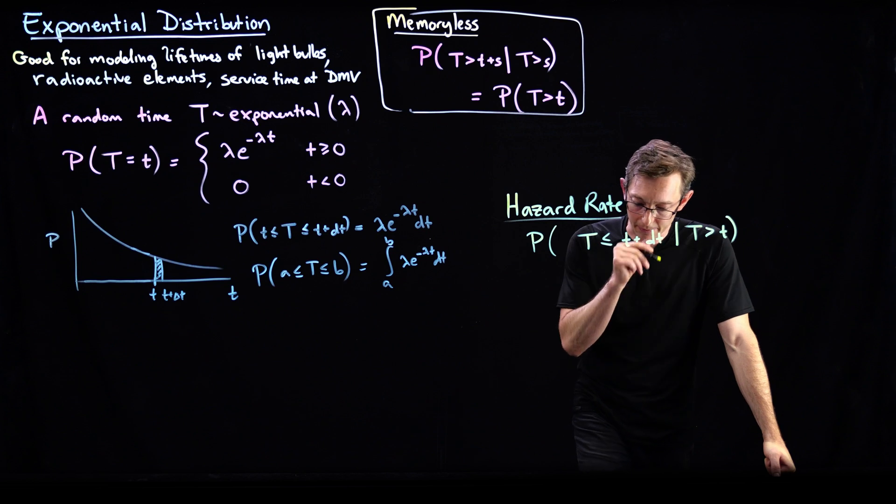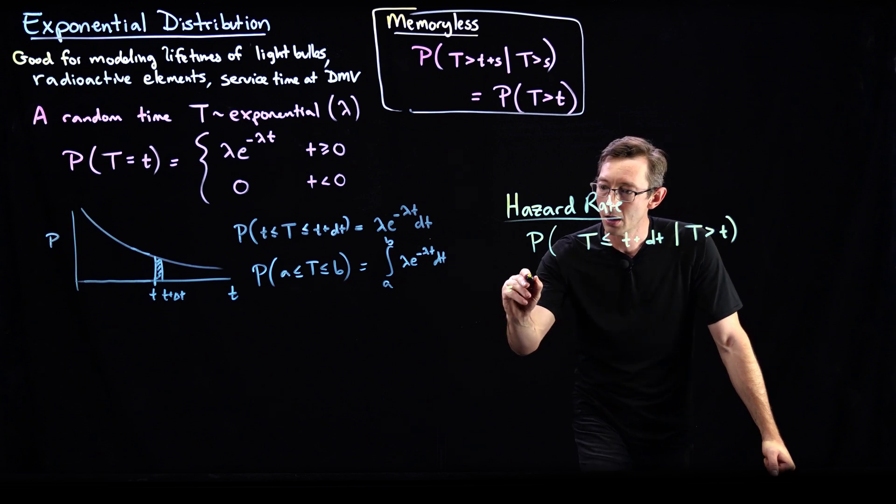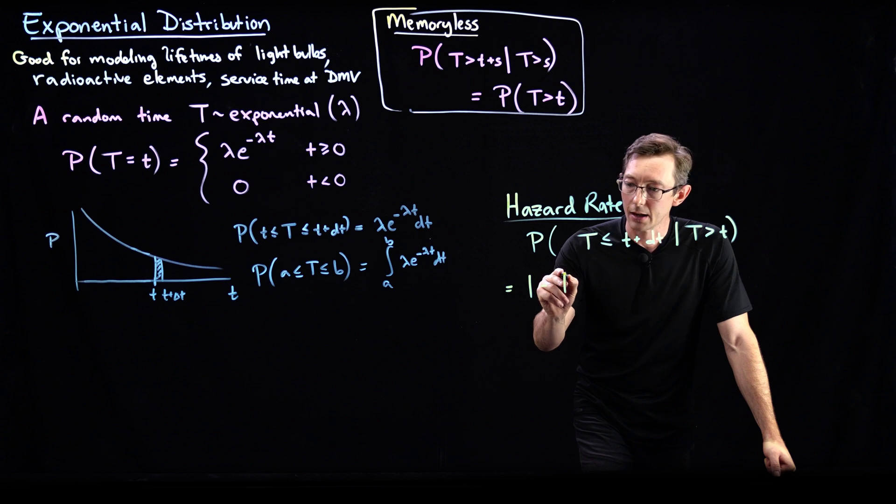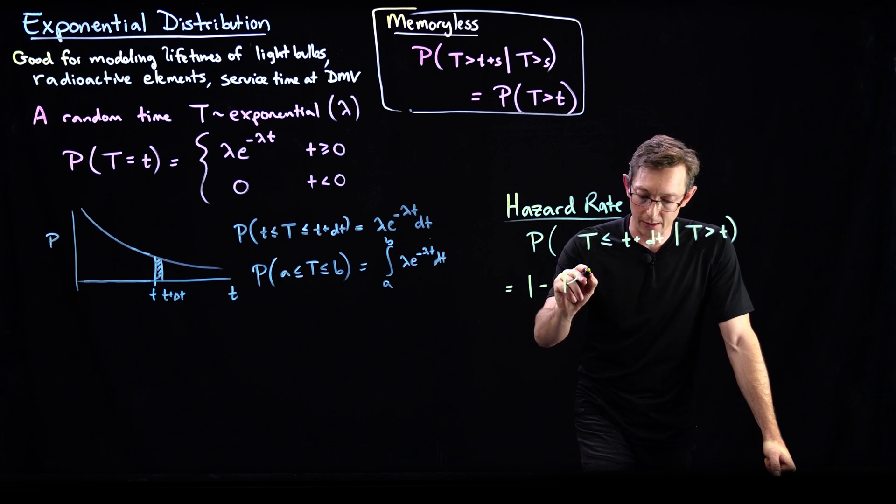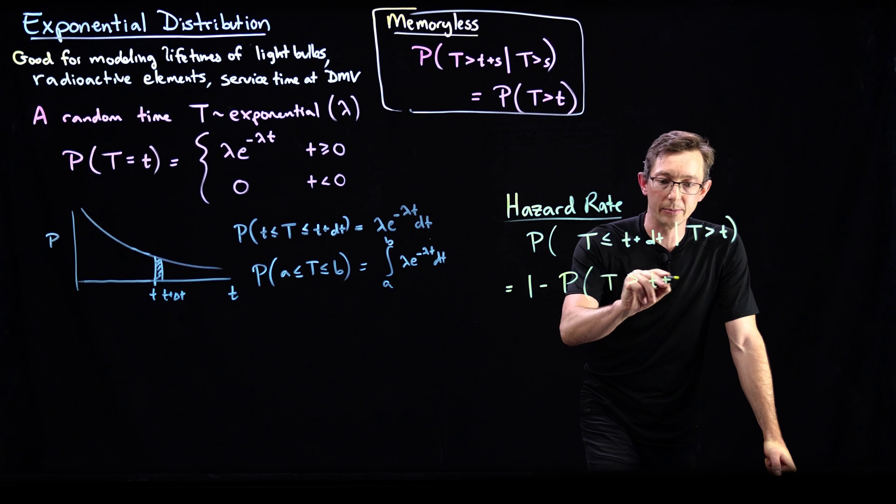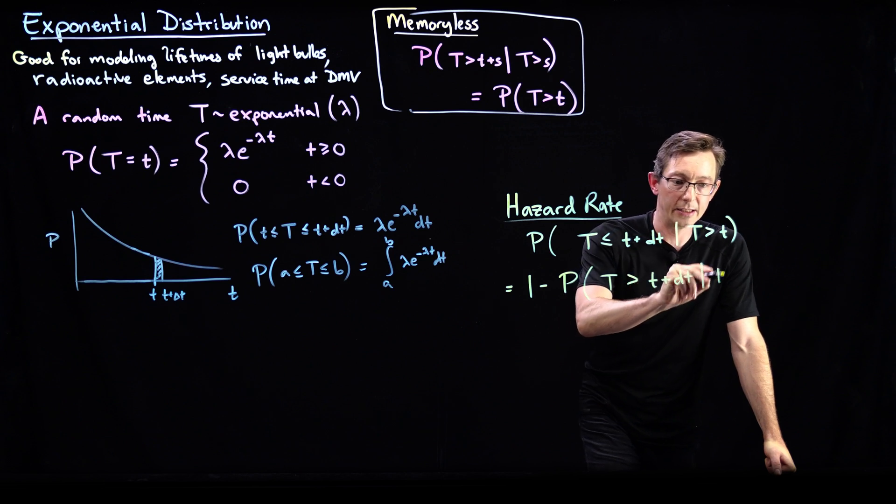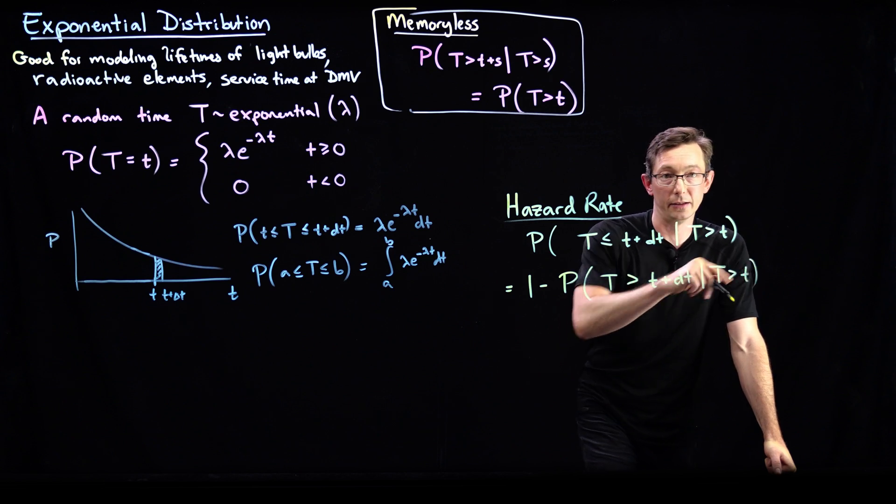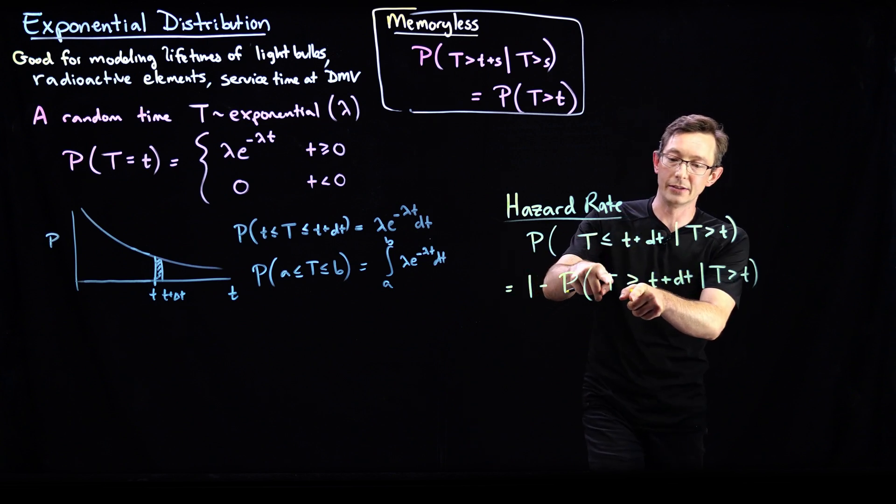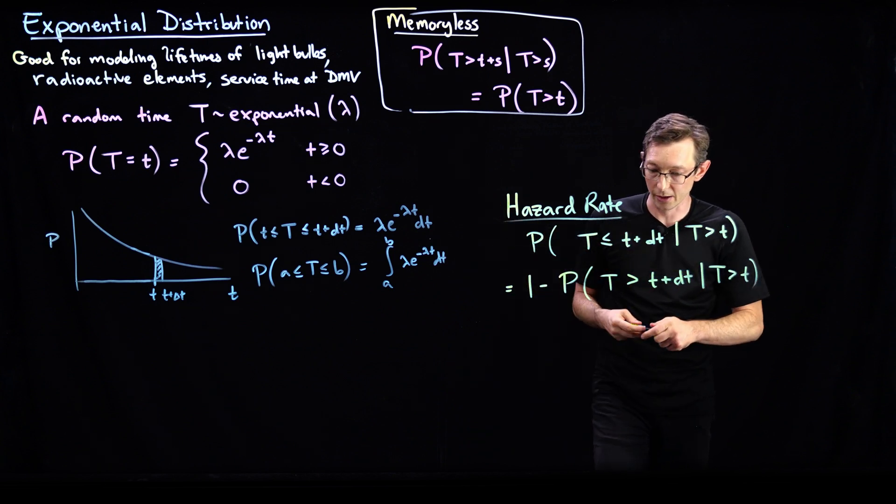And so we can compute this thing, this is equal to 1 minus the probability of T living longer than t plus delta t, given that T has already lasted little t. This is again, the probability of T being less than something is 1 minus the probability of T being greater than something, that's pretty okay.